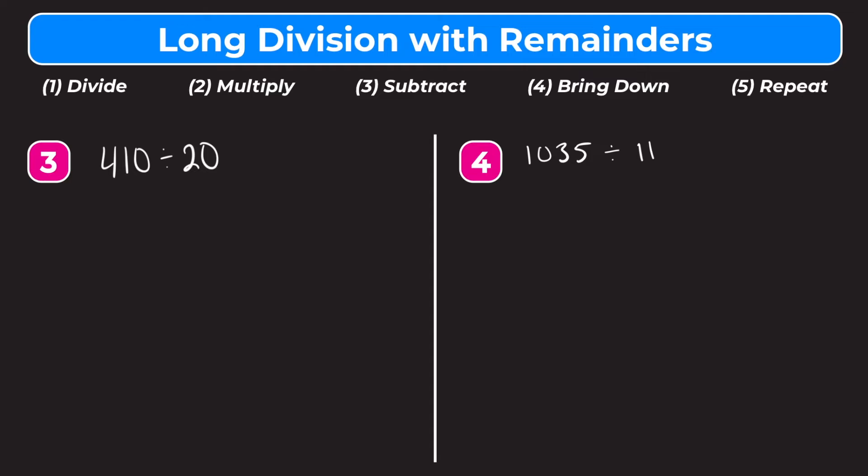In our first two examples, our divisor — the number we were dividing by — was a single-digit number. But sometimes you're going to have a divisor that's two digits, and you have to know how to handle those as well. So here we have two examples like that. Let's try number 3: we have 410 divided by 20. Let's rewrite this as a long division problem — 410 as our dividend under the bar, and 20, our divisor, outside the bar.